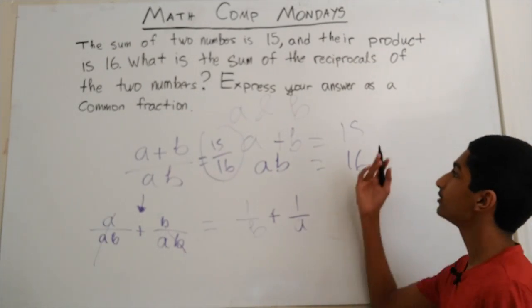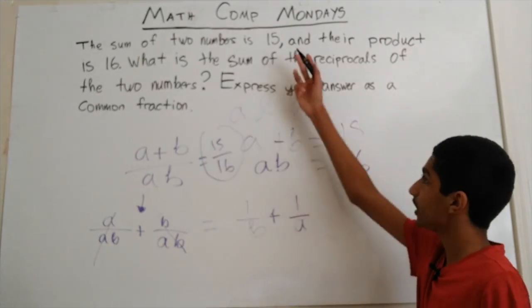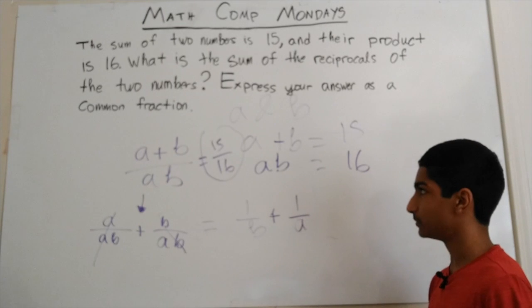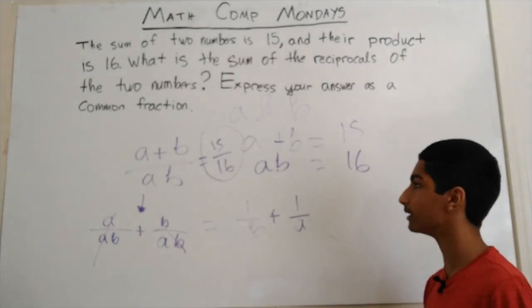And see, we didn't even have to figure out what the roots were in this problem. We just had to figure out the sum of the reciprocals of the two roots. So that's actually the trick in this problem: being able to realize that you don't actually have to figure out what the two numbers are.